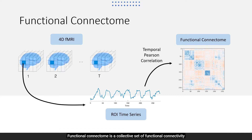Functional connectome is a collective set of functional connectivity in the brain, which can be represented as a 2D square matrix.